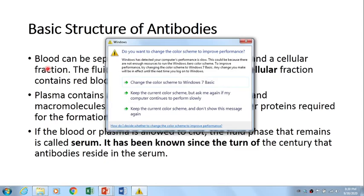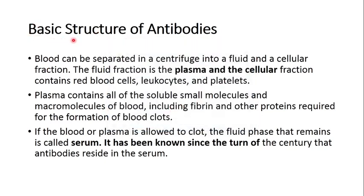When we take blood and separate it in a centrifuge — usually a serological centrifuge — we get a fluid part at the uppermost portion and a cellular part at the lowermost portion. The fluid part of the blood is known as plasma, while the cellular part contains the red blood cells, white blood cells, and platelets.